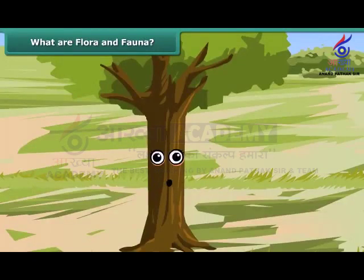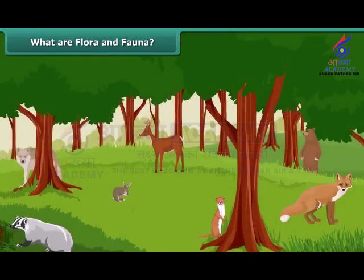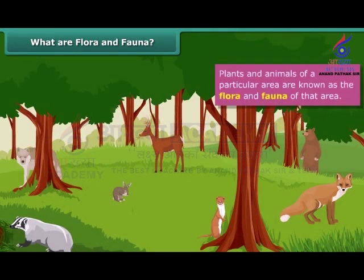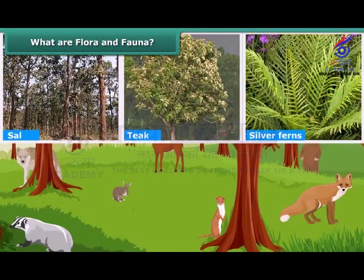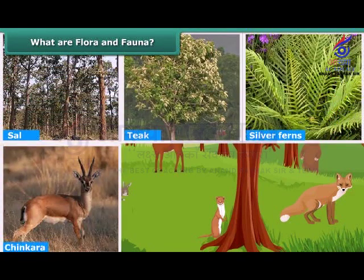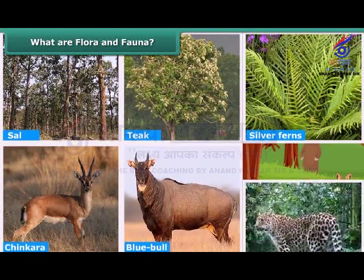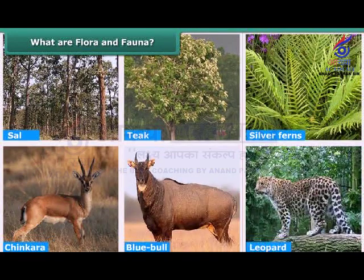Students, you must have observed that some animals and plants typically belong to a particular area. Plants and animals of a particular area are known as the flora and fauna of that area. For example, sal, tea, and silver ferns are the flora, and chicanara, blue bull, and leopard are the fauna of the Punchmari Biosphere Reserve.